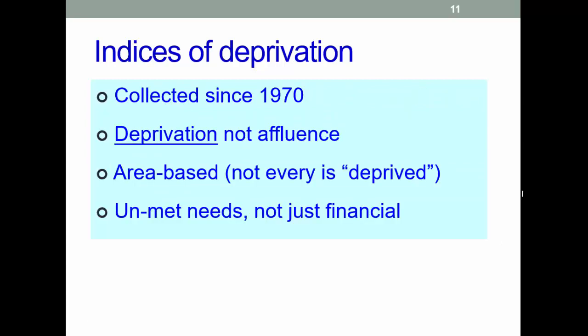At the neighbourhood level, the indices of deprivation provide a place-based insight into deprivation. However, this description does not apply to every person living in an area — that's quite important. Many non-deprived people live in deprived areas, and many deprived people live in non-deprived areas. It is important to note that the IOD is designed to identify and measure specific aspects of deprivation rather than measures of affluence.